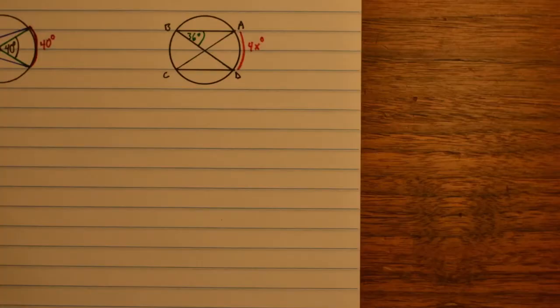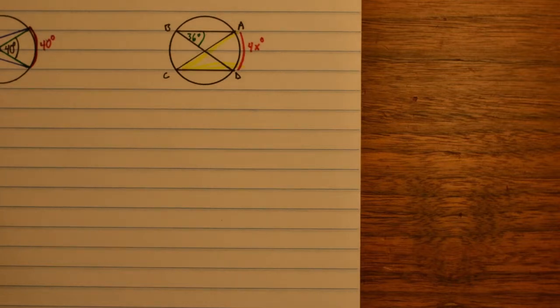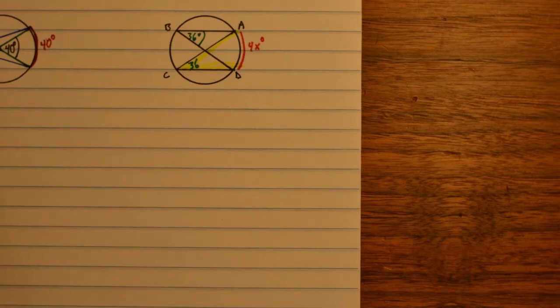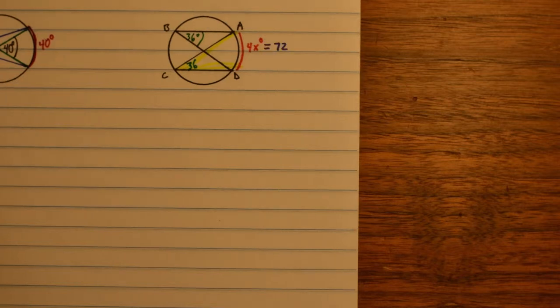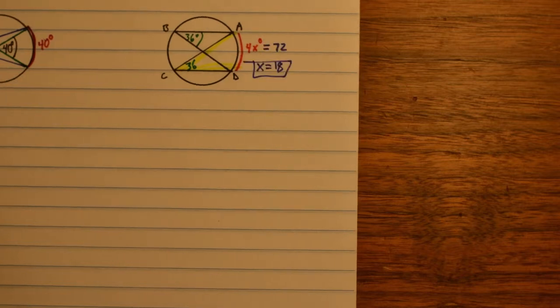Here we have arc AD given as 4x degrees, and angle ABD is 36 degrees. Angle ACD is also an inscribed angle, and it intercepts the same arc as angle ABD. So both angles are 36 degrees, meaning arc AD must be 72 degrees. Therefore, we get a value of x equals 18.